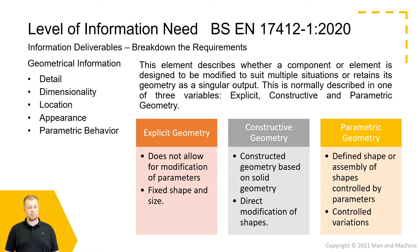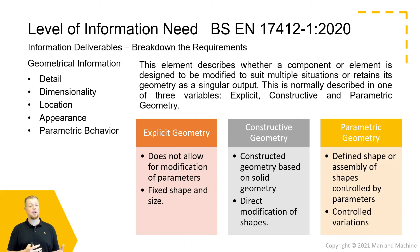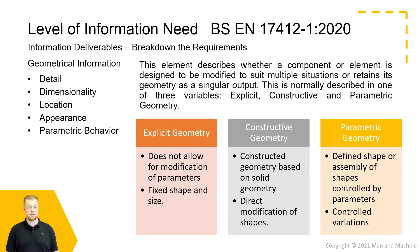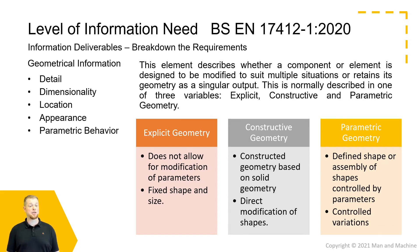We also have parametric behaviours — the ways in which we want to modify and change the geometry in relation to the parameters that exist within each object or the overall building. This may be described as explicit geometry, where shapes tend to be fixed in size and shape; constructive geometry, which is normally modified directly through modification of solid geometry within an object; or parametric geometry — defining a shape through the use of controlled variations and variables within a parameter of an object or building.